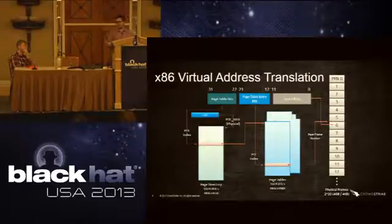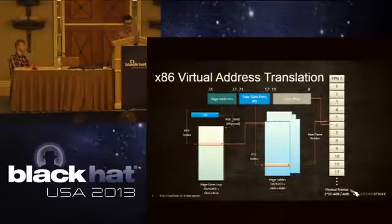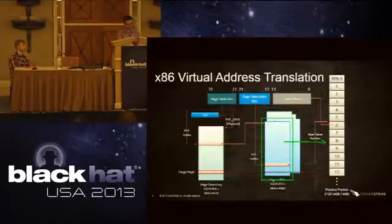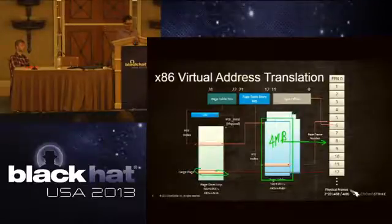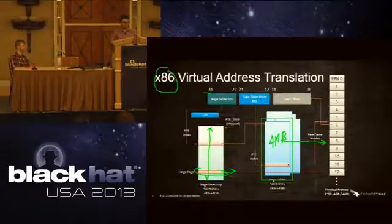There are also large pages. If you have 20 megabytes of data that are all read-write and you're constantly doing address conversions, you can set up a large page — an entry in the page directory that directly points to physical memory. A page table has 1,024 entries each describing 4 kilobytes, so it describes 4 megabytes total. A large page therefore describes 4 megs directly. With 1,024 page directory entries each describing 4 megs, a page directory describes 4 gigs — which makes sense for 32-bit x86.